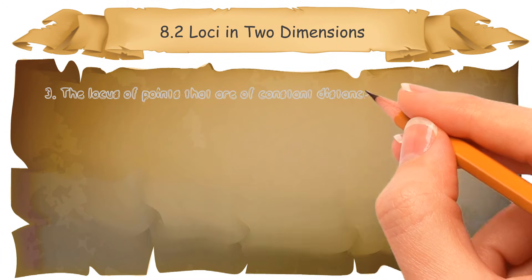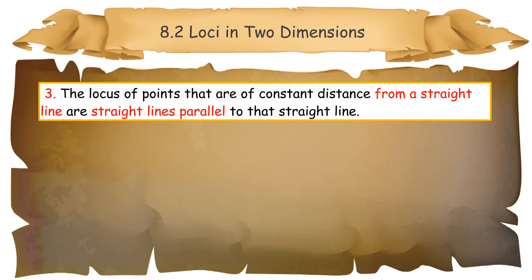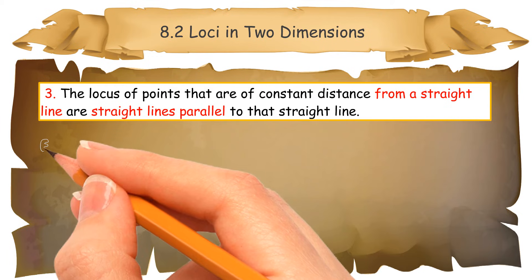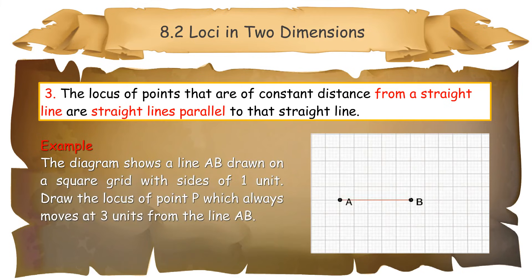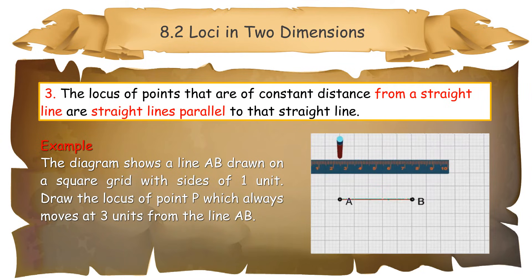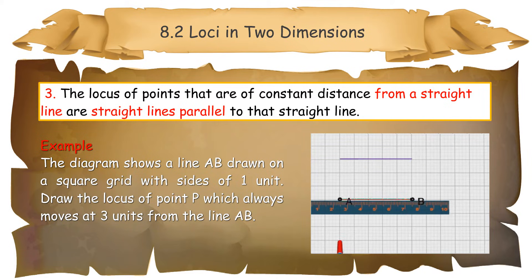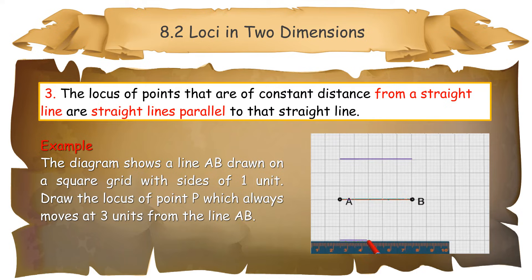Three: the locus of points that are of constant distance from a straight line are straight lines parallel to that straight line. Example: the diagram shows a line AB drawn on a square grid with sides of one unit. Draw the locus of point P, which always moves at 3 units from the line AB. Solution: the locus of point P moving 3 units from the line AB is a pair of lines parallel to AB and 3 units from AB.